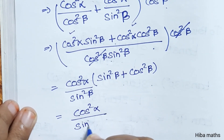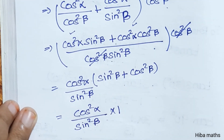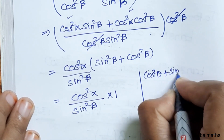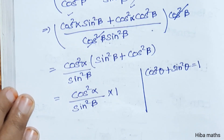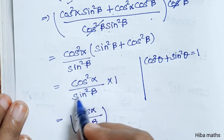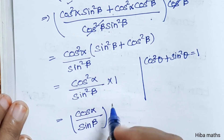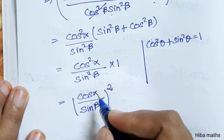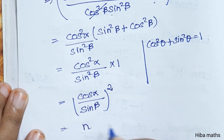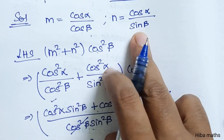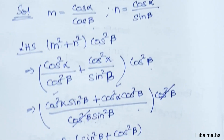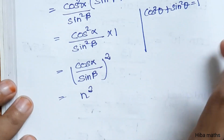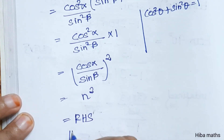So (m² + n²) · cos²β equals cos²α / sin²β, which is exactly n². Since n equals cos α / sin β, n² equals cos²α / sin²β. This equals the right-hand side, hence proved.